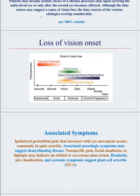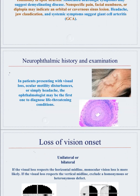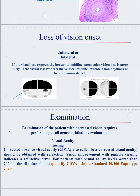Regarding giant cell arteritis — the ophthalmologist may be the first one to diagnose this life-threatening condition. Regarding unilateral versus bilateral: a unilateral lesion is confined to one eye — for example a superior altitudinal defect — while a bilateral lesion, such as right homonymous hemianopia shown in this visual field photo, involves both eyes.